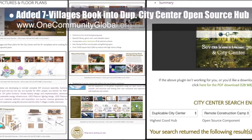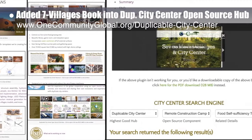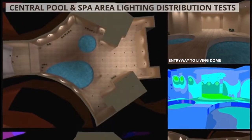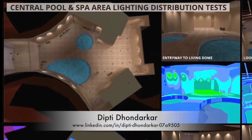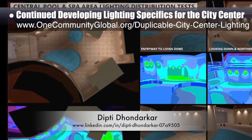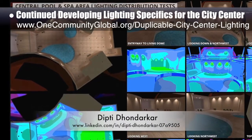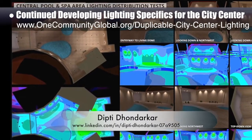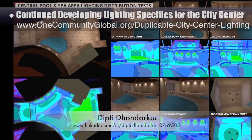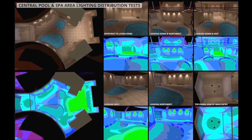The core team, working with Dipty Donderker, electrical engineer, also continued developing the lighting specifics for the city center. This is Dipty's 93rd week volunteering on this task. The focus this week was final lighting selection, placement, and testing for the central pool and spa area to produce and add to the website the graphic shown here.